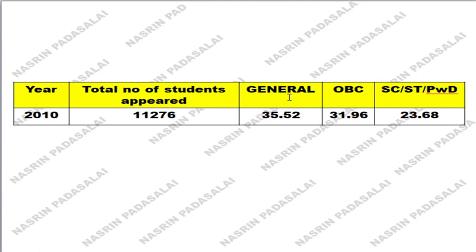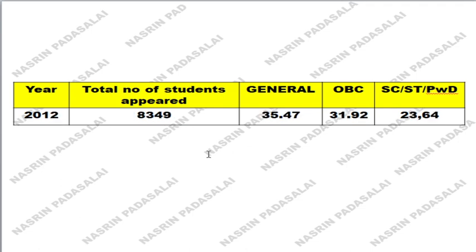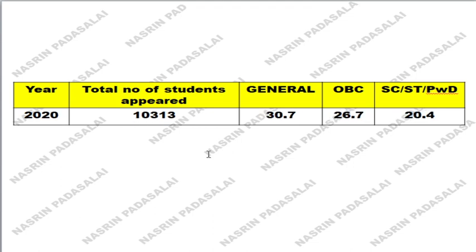General category will have a higher cutoff and OBC will have a lower cutoff mark. SC, ST, and persons with disability will have a very low cutoff compared to OBC and general category. I have compiled data from 2012, 2015, 2016, 2017, and every year up to the present so you can review the year-wise minimum marks.